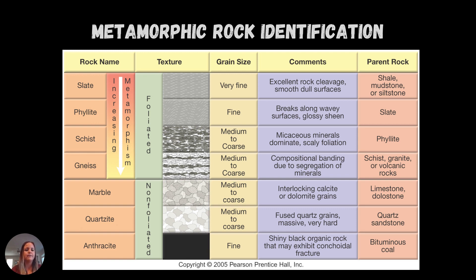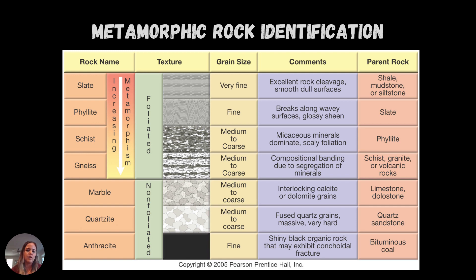With slate and phyllite, those are very fine-grained, so those are going to be very small particles. Gneiss and schist are more medium to coarse, so you're going to be able to see the crystals a lot bigger. With slate and phyllite, the big difference is going to be the appearance on the surface — whether it's glossy or it's dull.